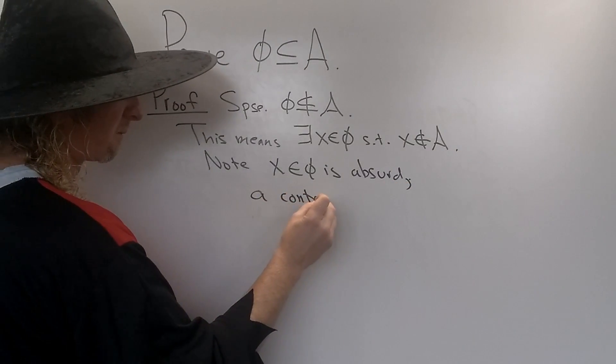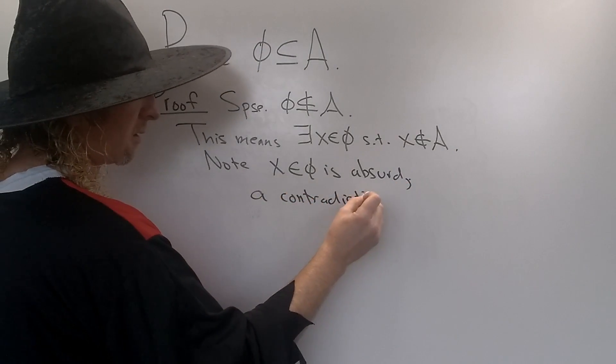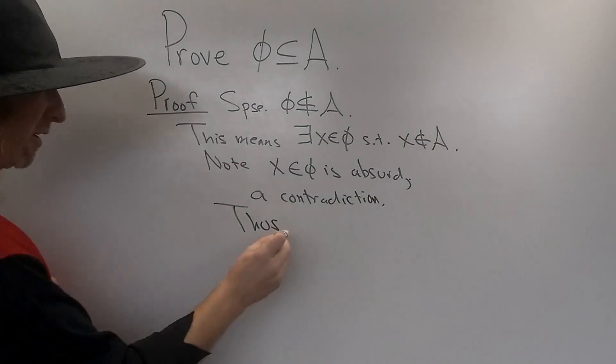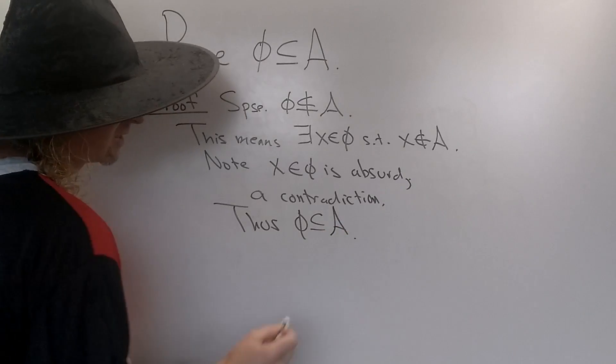A contradiction, thus the empty set must be a subset - the empty set is a subset of every set.